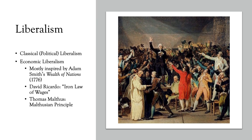Therefore, Malthus believed it was not appropriate for the government to intervene and support the poor. If the government provides social welfare programs, that will only make the issue worse. He argued that population growth is going to outstrip the food supply, so we need natural population checks — things like famine, war, or plagues — to limit population growth.